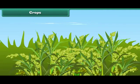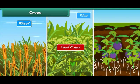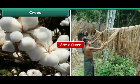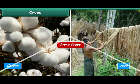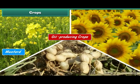Crops: Several plants which are grown in fields by farmers and are useful in various ways are known as crops. Crops are mainly of three types: food crops (example: wheat, rice, and vegetables), fiber crops (example: cotton and jute), and oil-producing crops (example: mustard, sunflower, and peanut).